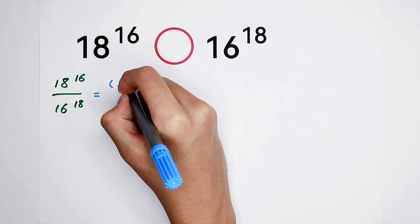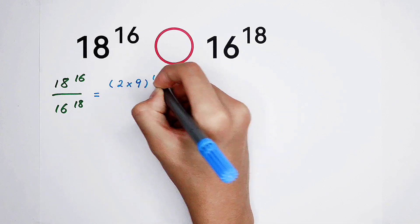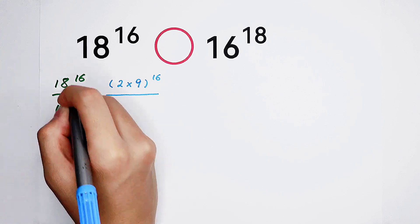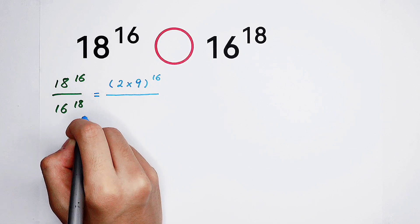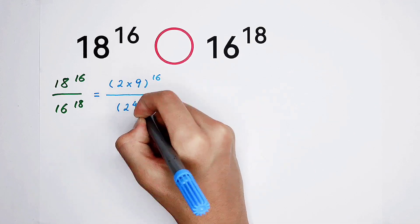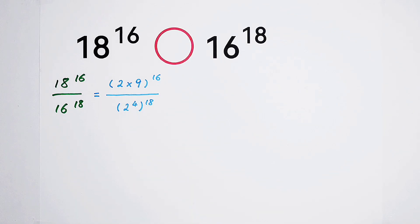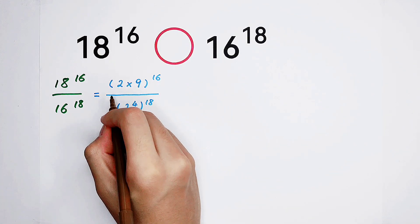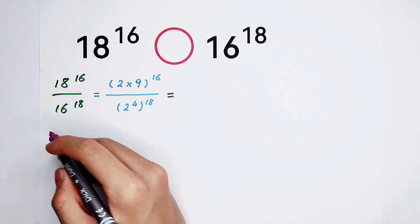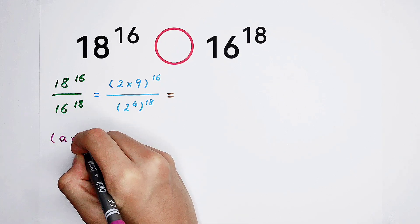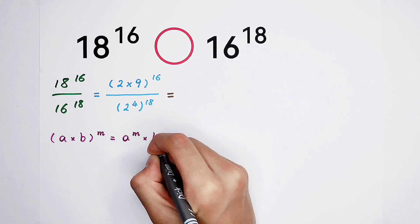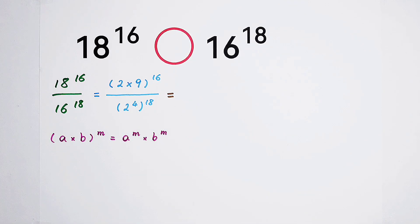18 is 2 times 9. We're going to transform it in a basis, because the exponents... 16 is 2 to the power of 4. So it has this form. The numerator is 2 times 9, also to the power of 16. We have the formula: A times B, all to the power of M, is equal to A to the power of M times B to the power of M.